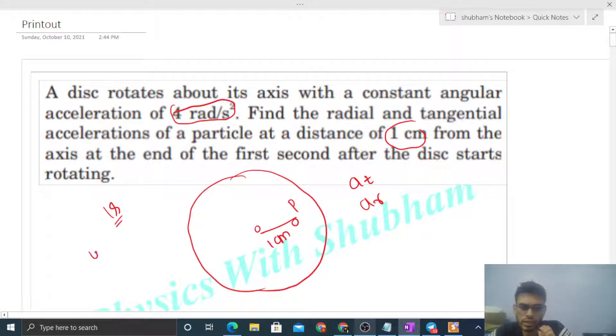So it will start from rest. So initial omega will be 0 and after one second can you find out the final angular velocity of this disk? Of course alpha is given. Alpha is given that is 4 radian per second square, right?